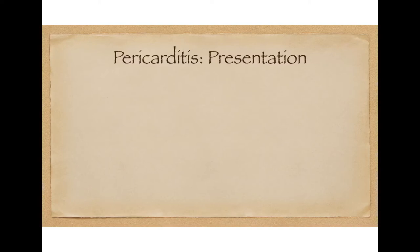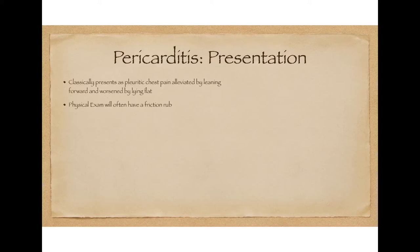The clinical features that will help you identify a patient with pericarditis: typically you'll get a history of a patient who presents with pleuritic chest pain, worsening with deep inspiration, that's also alleviated by leaning forward and worsened when the patient lies flat. On physical exam, you'll hear a characteristic friction rub caused by stretching of the inflamed pericardium.